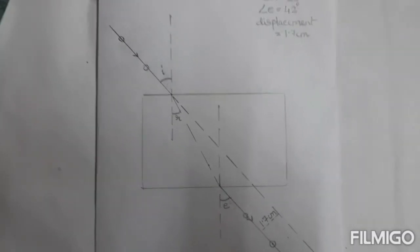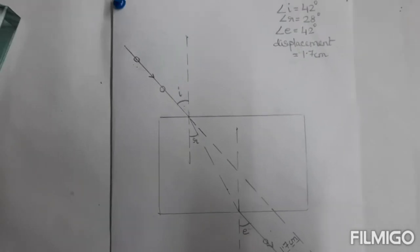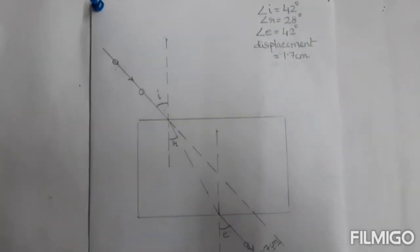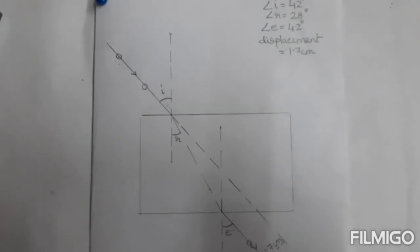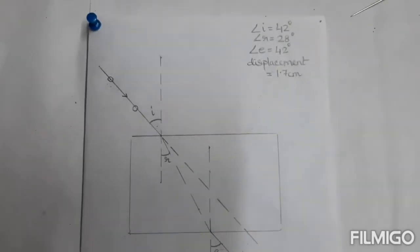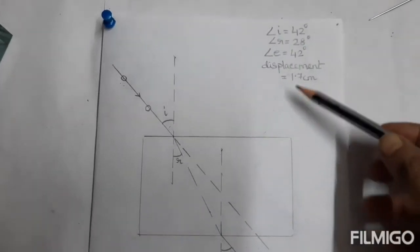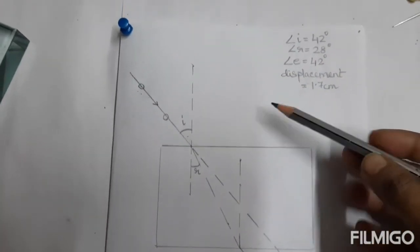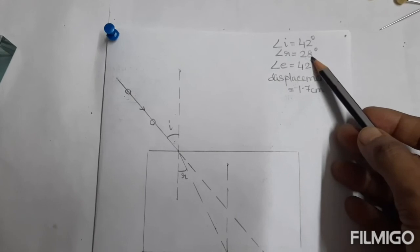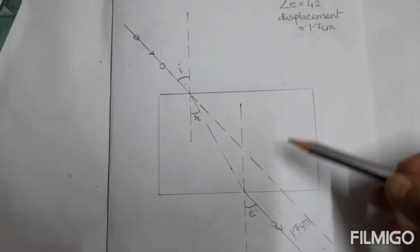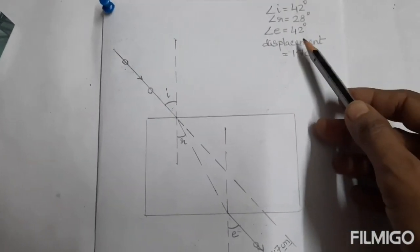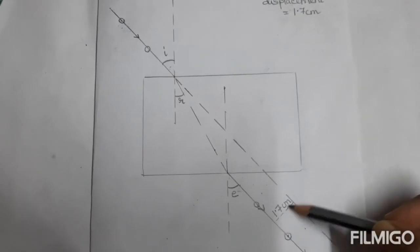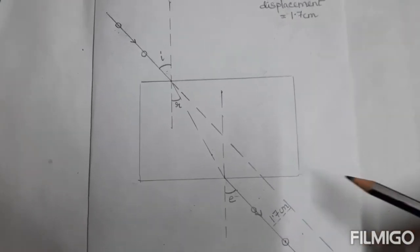Because we need minimum 3 data to come to a conclusion, the last experiment we do with the angle 42 degree. Respectively we find angle of refraction 28, angle of emergence again comes to 42 degree. Displacement we measure 1.7 centimeter.